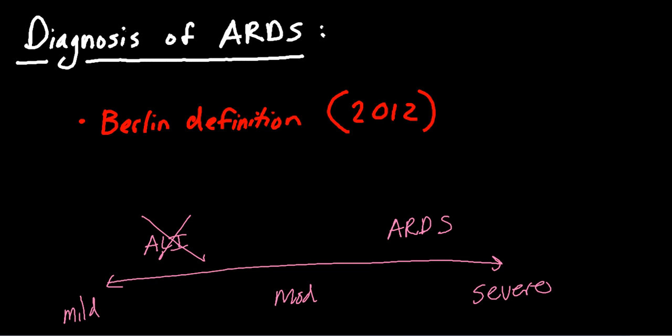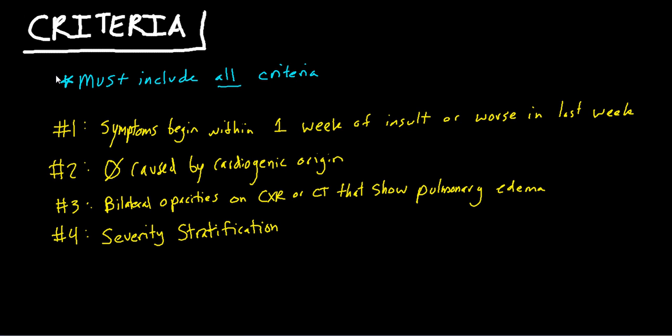For the criteria for diagnosing ARDS, you must include all of the following. Symptoms must begin within one week of the original insult or symptoms become worse in the last week. This criteria means that the insult has to be recent. The lung changes and the respiratory distress has to be an acute onset within one week.